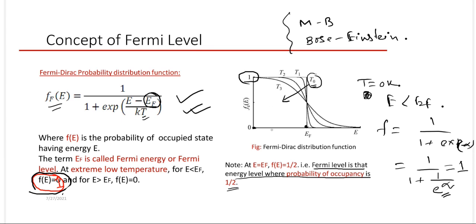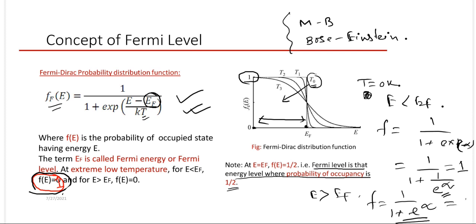Similarly, for E greater than Ef at T = 0K, F equals 1 / (1 + e^(+infinity)), so the denominator becomes infinite and the probability function is 0. This gives a step-like distribution: probability is 1 for E less than Ef and 0 for E greater than Ef. This is the definition of Fermi level and how it is derived from the Fermi-Dirac probability distribution function.